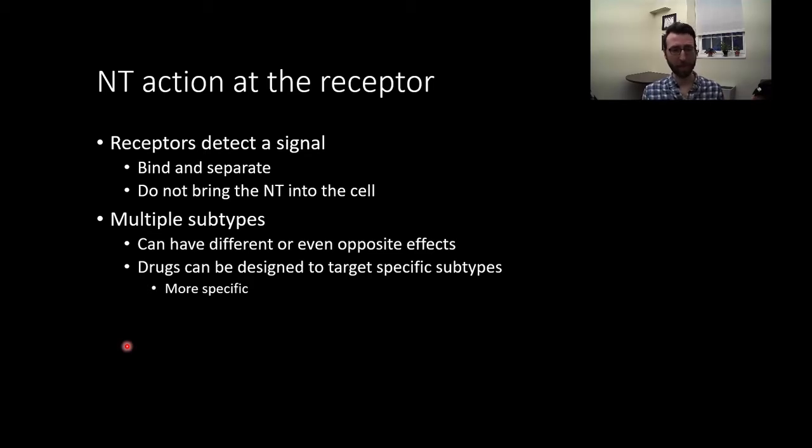Receptors can have multiple subtypes. They can have different or even opposite effects, and we can engineer drugs to target specific subtypes for greater specificity. To use an example that we'll talk about in much greater detail later on, dopamine has five receptor subtypes: D1, D2, D3, D4, and D5, which are further subdivided into two families. There's D1-like, which is D1 and D5, which are excitatory in terms of their effect on certain intracellular signaling molecules. And D2-like, which are D2, D3, and D4, which are inhibitory with regard to the same signaling system. So different receptor subtypes can function very differently.